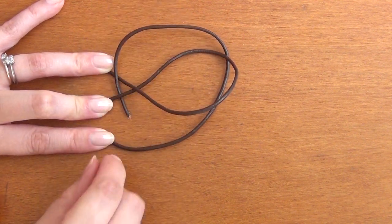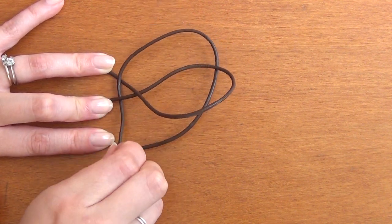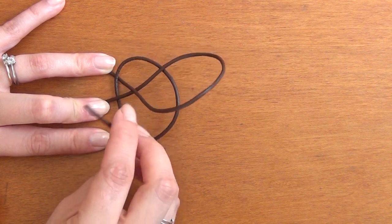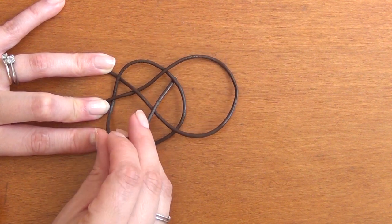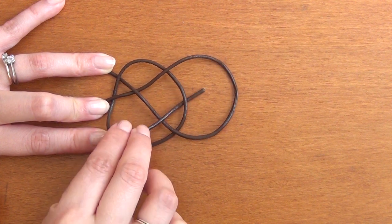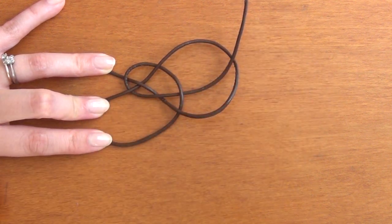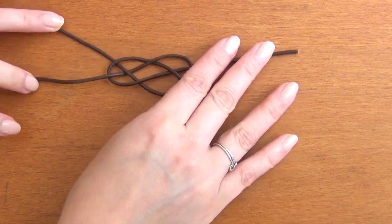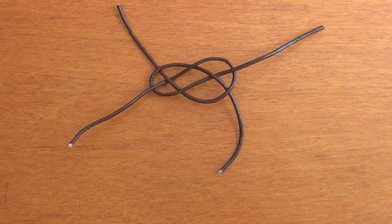Then you'll want to put that end underneath the bottom tail of your first piece. Now it gets a little complicated—you're going to weave over, then under, and then over again. Make sure that you do this step correctly.